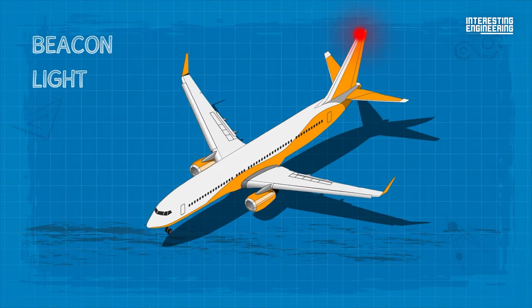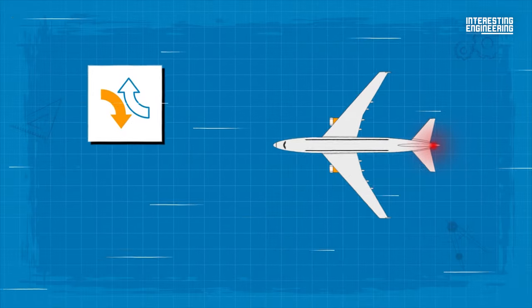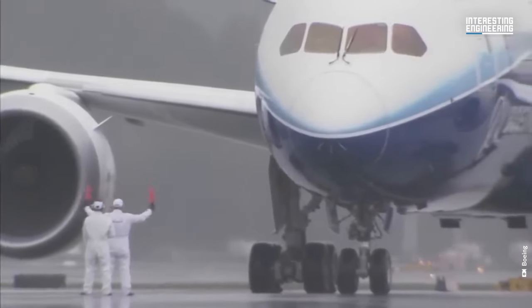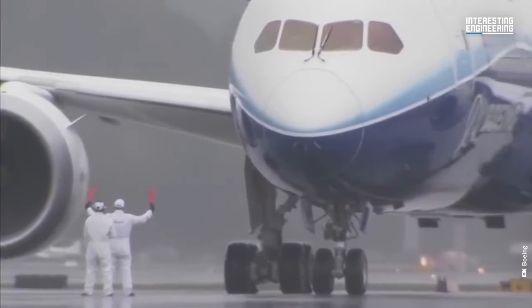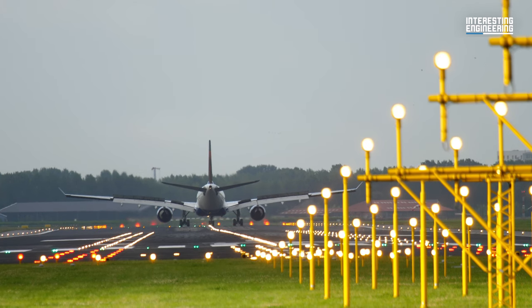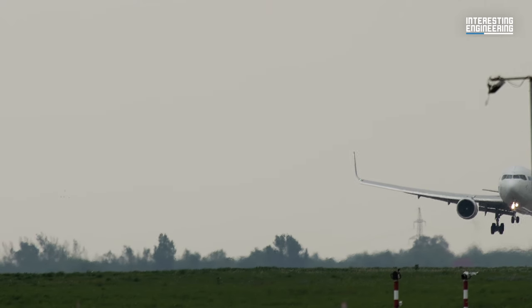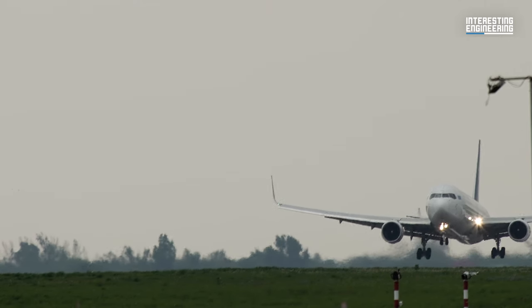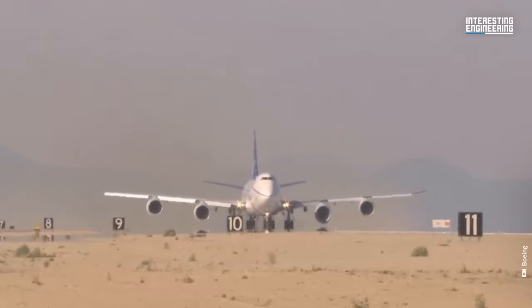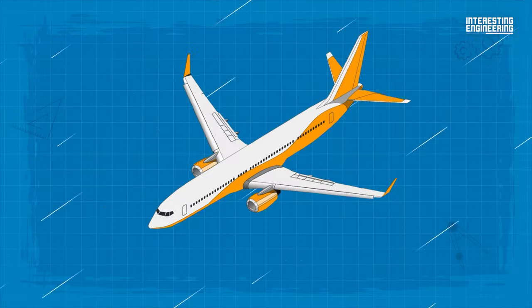The beacon light is a slow-flashing red light located at the top of an airplane. It is part of the collision avoidance measures. They are recommended to be turned on before starting the engine, so people around the airplane know that the plane is active — pilots are about to start the engines and you're supposed to get away from the plane. The FAA requires beacon lights to be turned on during taxi, takeoff, and flight, meaning this light stays on from before starting the engines to turning the engines off.